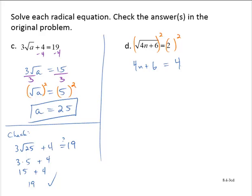Now I notice that this is just a linear equation. I subtract 6, yielding 4n equals negative 2. And I divide through by 4, yielding n equals negative one-half.